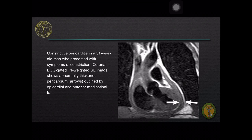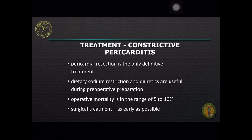Echocardiography cannot definitively establish or exclude the diagnosis of constrictive pericarditis. Cardiac CT scan and magnetic resonance imaging are more accurate. The latter is useful in evaluating myocardial involvement. Shown here is a cardiac MRI image of a 51-year-old man who presented with symptoms of constriction — a coronal ECG-gated T1-weighted SE image showing abnormally thickened pericardium outlined by epicardial and anterior mediastinal fat.